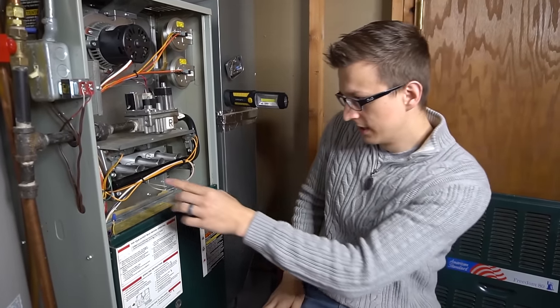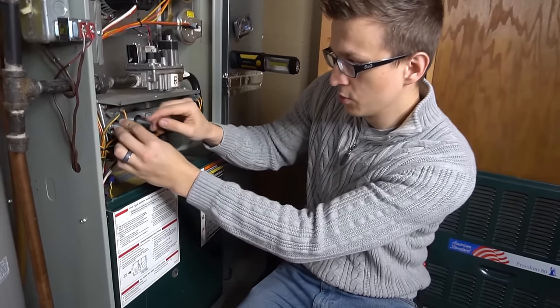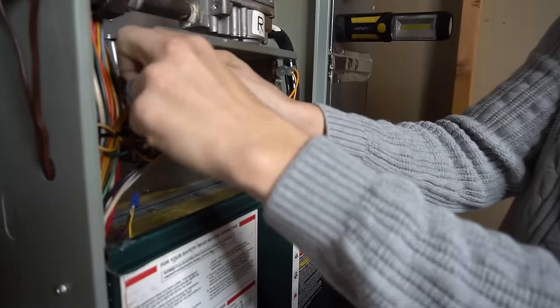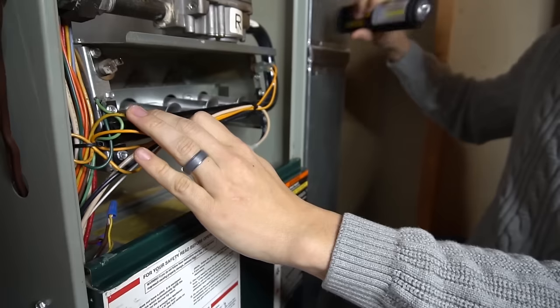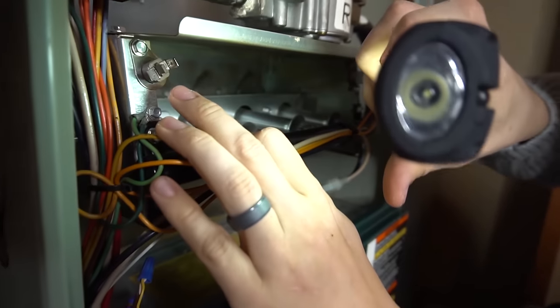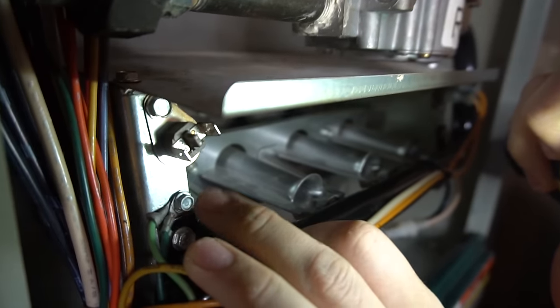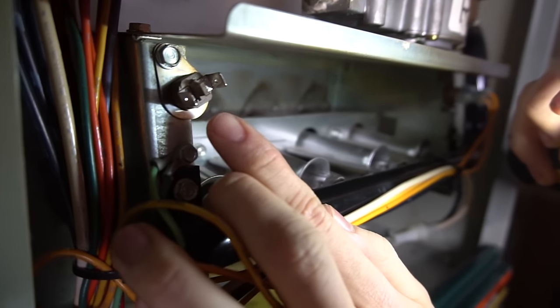The flame rollout switch is this little guy right here. Usually it's just a little switch. I'll just unplug mine so you can see it. That right there is the flame rollout switch, and they are manual reset.